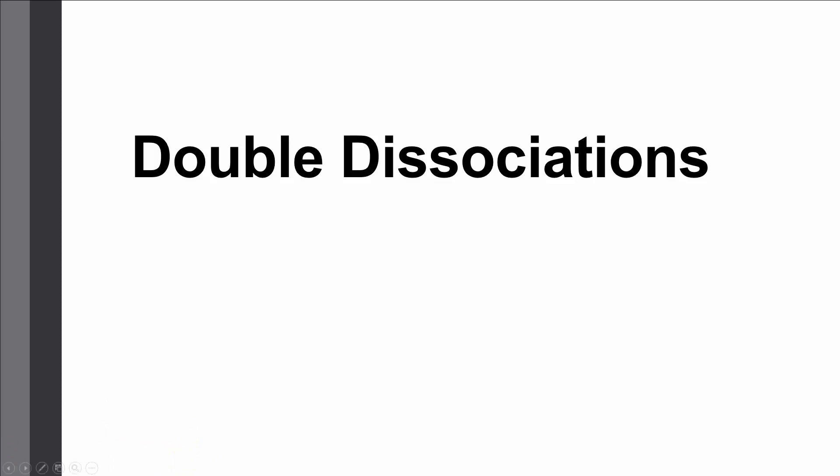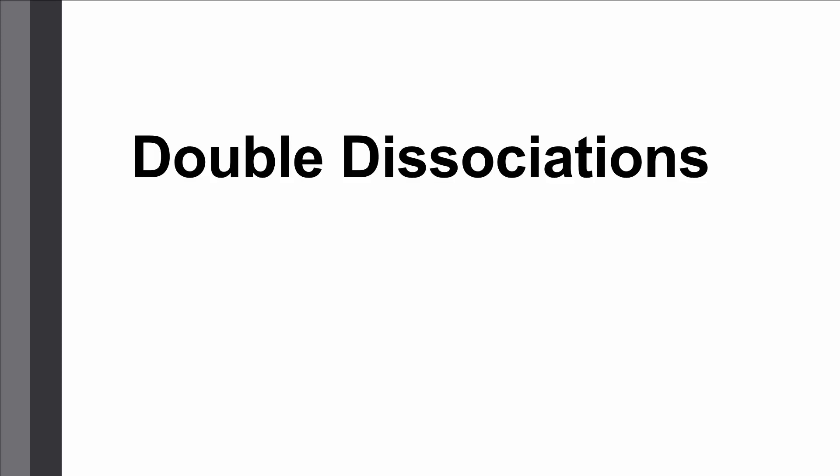When we left off in class last time, one of the things we were talking about was the idea of localization of function. To catch everybody up, this idea comes from the neuropsychological approach. Basically, what you do is look for people that have damage to a particular area of their brain and see what behavior is a problem for them. That leads to the generalization that the area of the brain that's damaged must be responsible for whatever behavior is impaired.